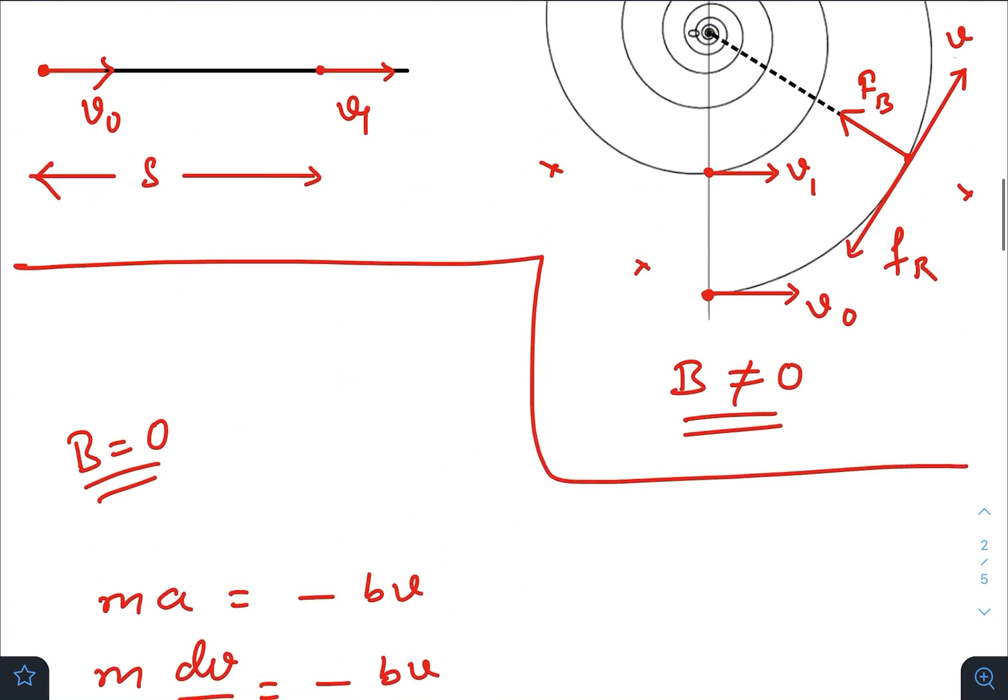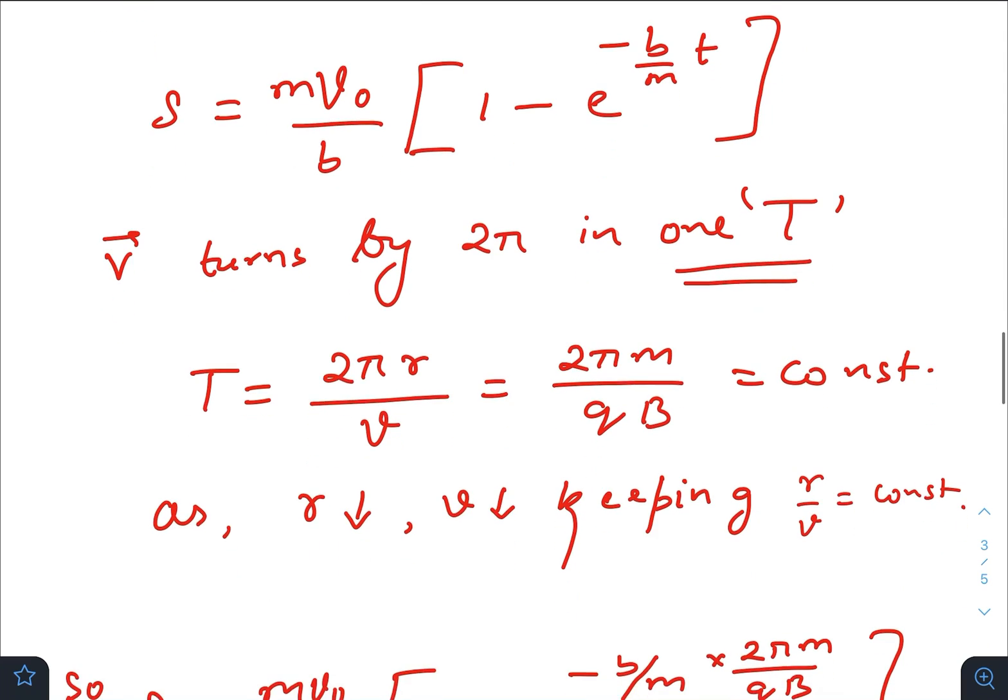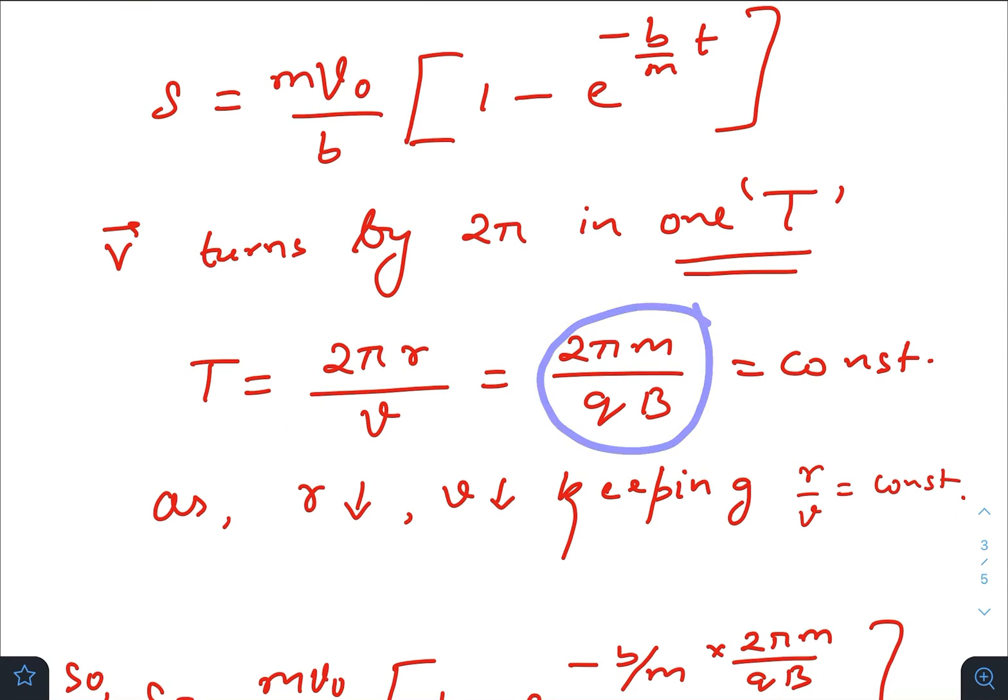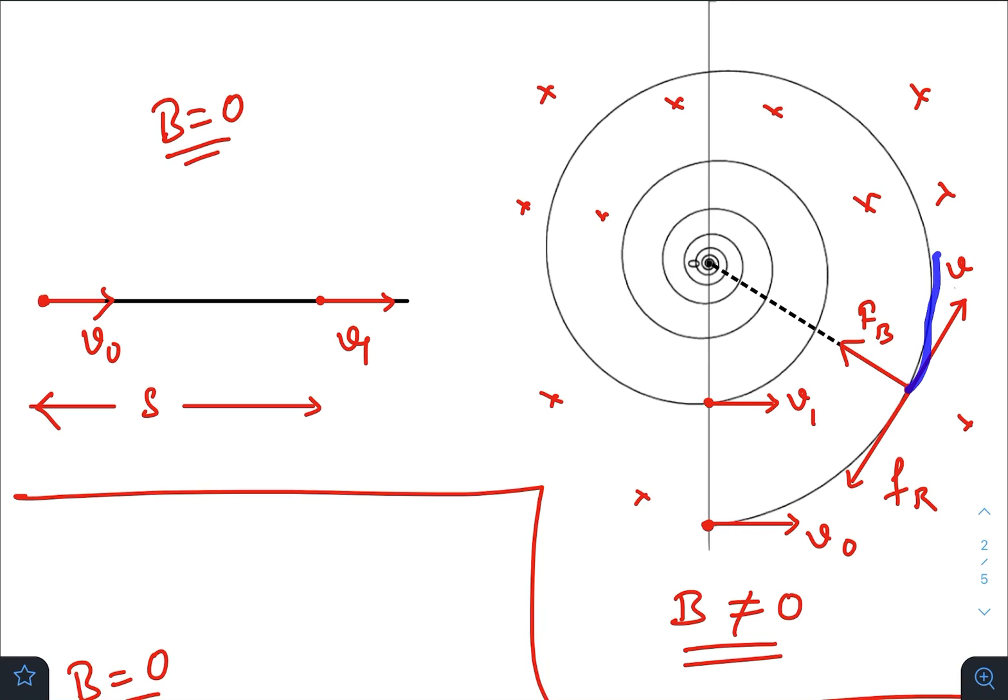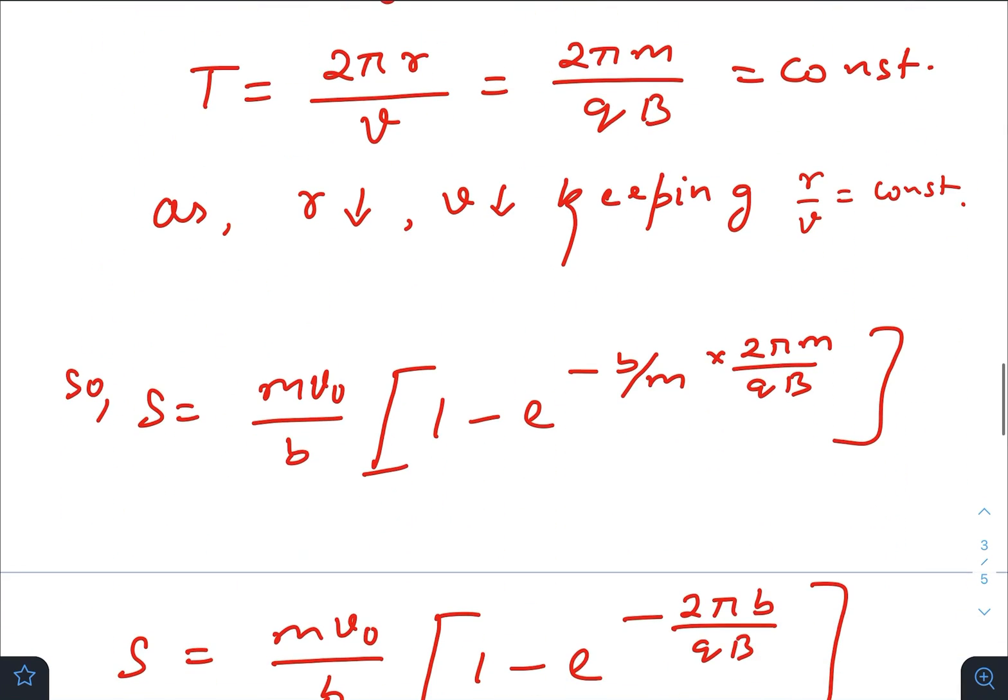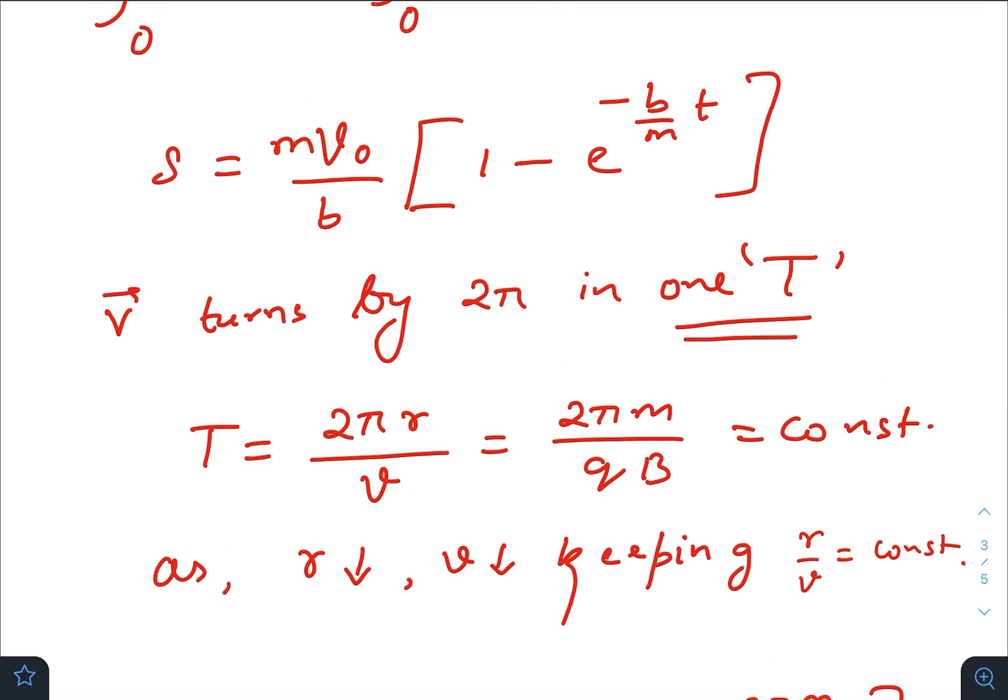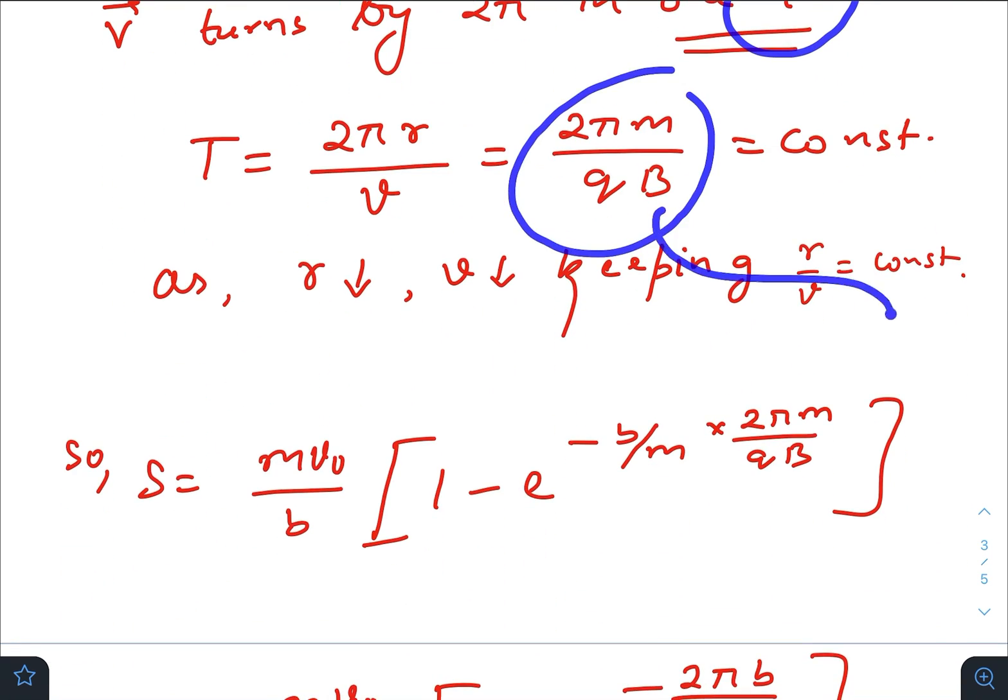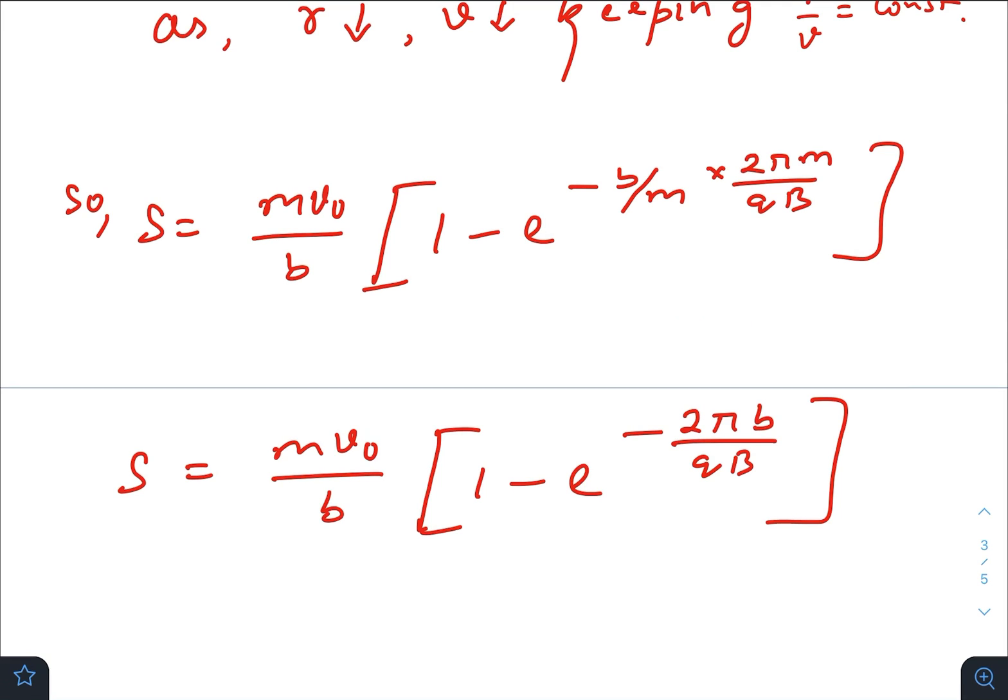Now let us check the concept of time period. For any instant suppose the particle is here. The formula for time period is 2πr divided by v, which will yield you a result of 2πm/qB which is constant. As the speed is decreasing with time, the radius is also decreasing, keeping the ratio of r by v constant. So the time period won't change. It does not depend on presence or absence of magnetic field. So just put the value of t as one time period, 2πm/qB will be placed here. So the final expression for the distance travelled would look something like this.